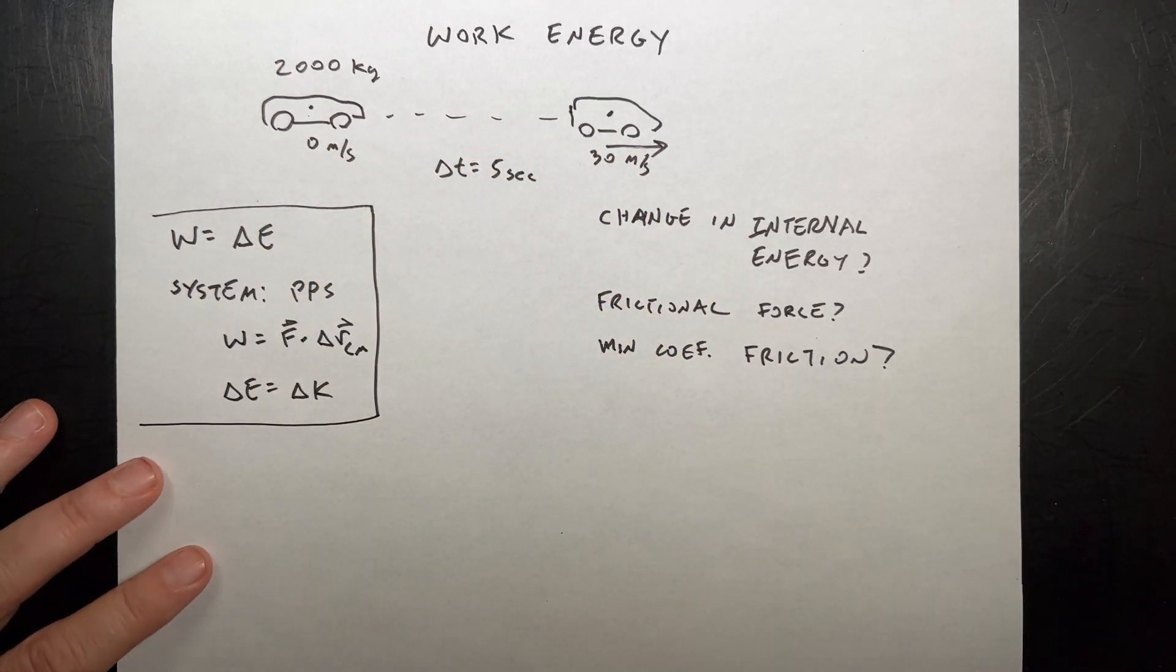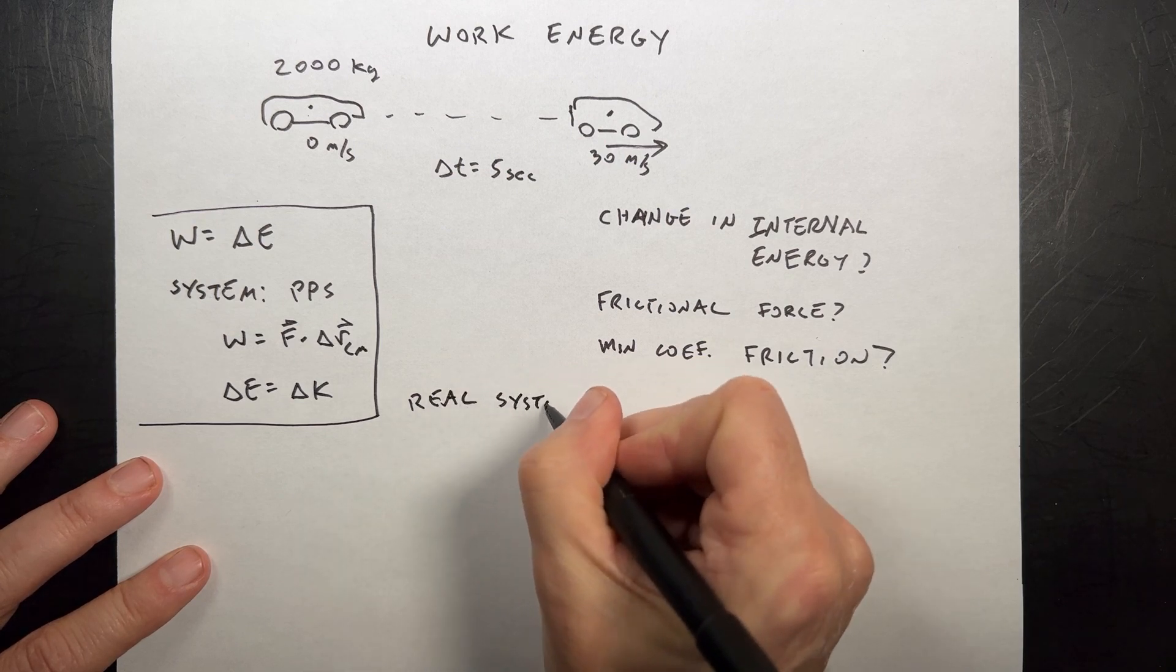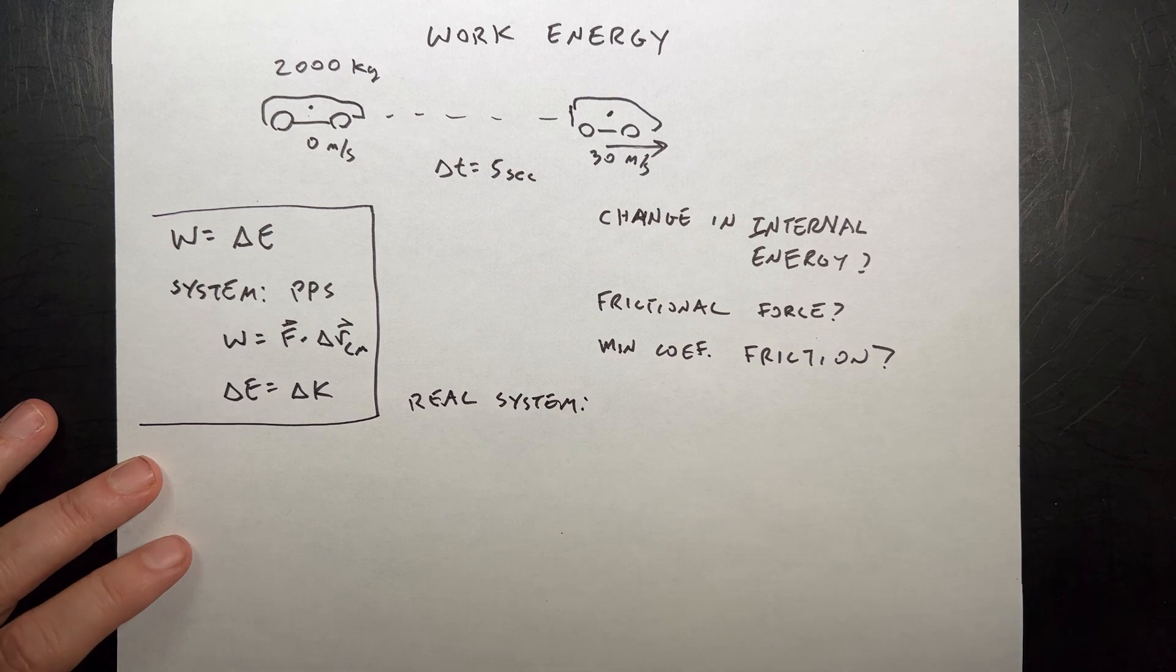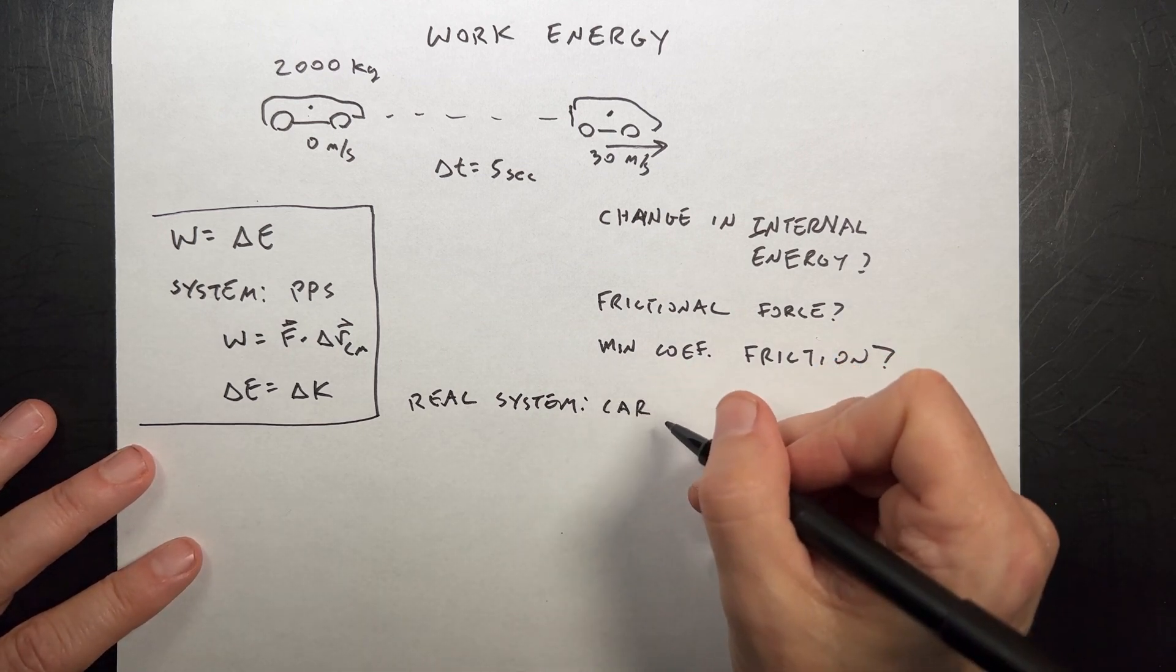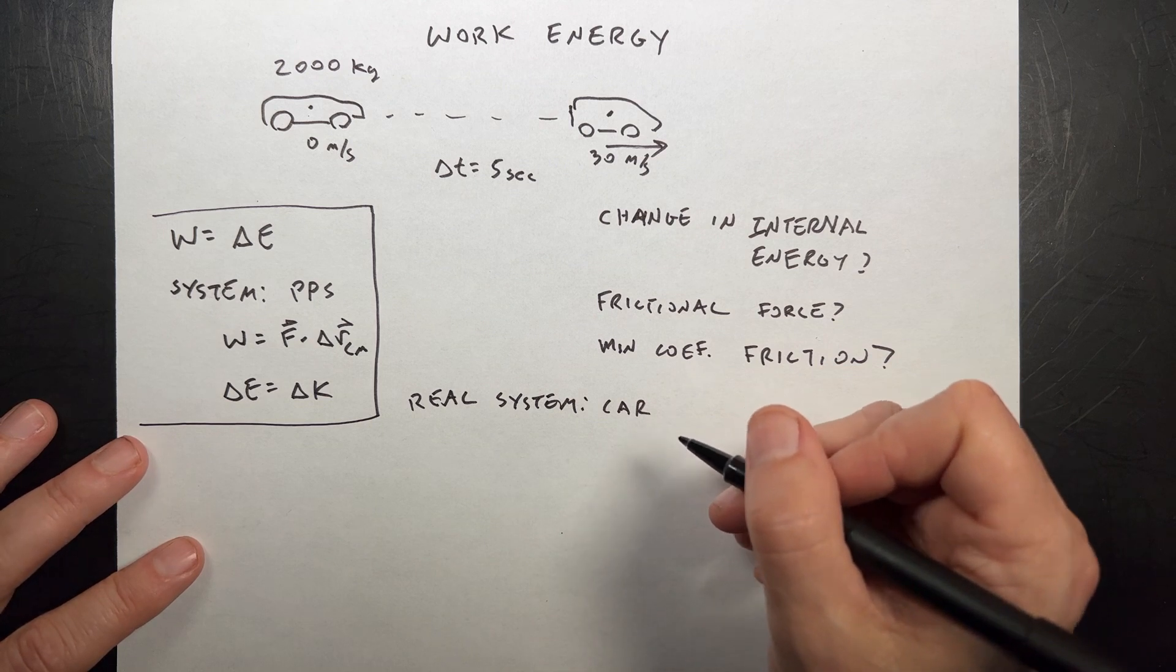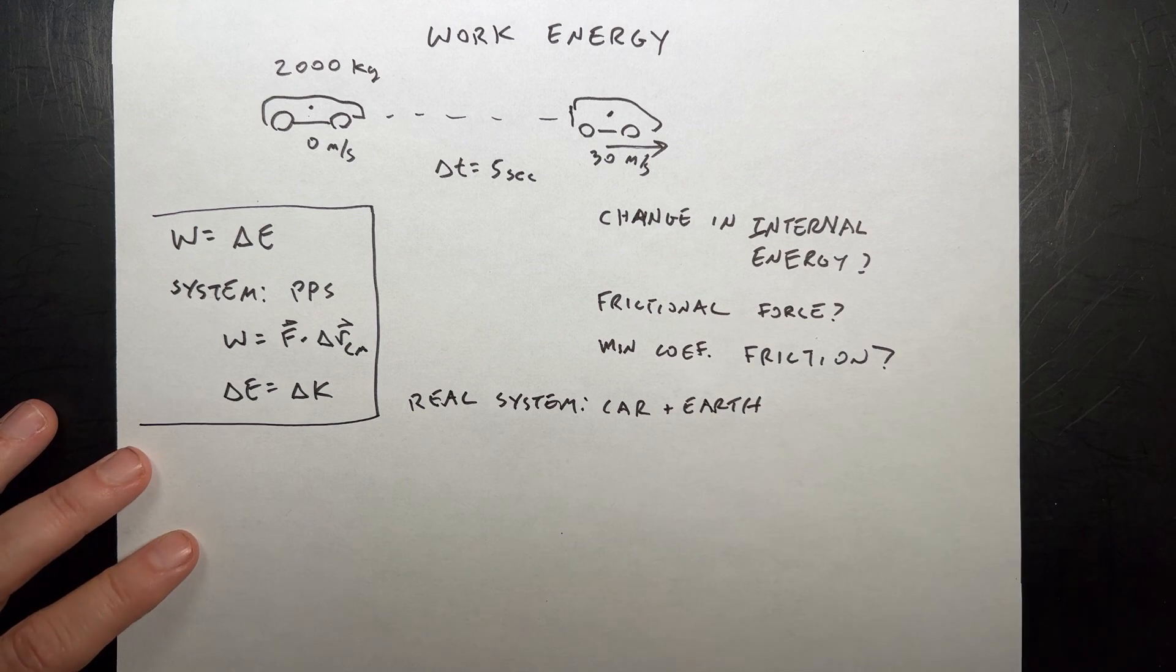Let's use the real system. The real system consisting of the car. No, I don't need to use the earth. Let's say plus earth. Who cares? This is on level ground. The car plus earth.